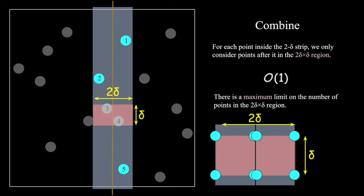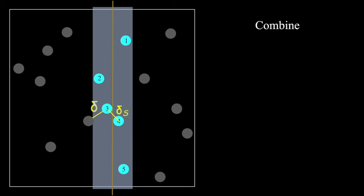Thus, for any point in the strip, we only need to pair it up with the next 7 points after it. Because we know that there are at most 7 points we haven't considered that could be in a distance shorter than delta from the point. Whenever we find a closer pair inside the strip, we just update delta.